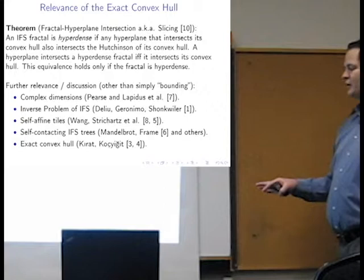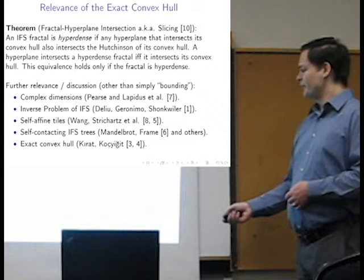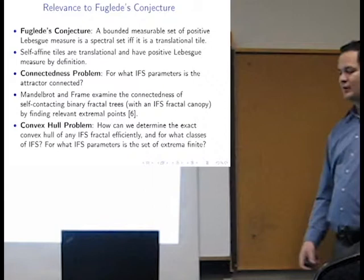And it also comes into play for self-contacting IFS trees. So if you want to achieve self-contact of the first-level iterates, then obviously what we need to look at is extremal points. So Mandelbrot and also Taylor and some other authors have written on that. So this paper is from around 2000.